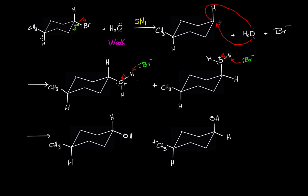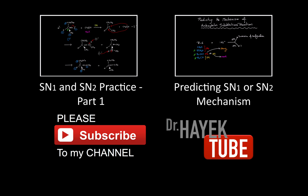Looking at the stereochemistry: CH₃ and Br were in trans configuration relative to each other. In the first product, CH₃ and OH are also trans since they face opposite sides. In the second product, CH₃ and OH are both facing the same side (upside), so this is cis. Remember, SN1 always gives a mixture of stereoisomers. In this case, since Br was on an equatorial bond, we obtain one product with OH on equatorial and another with OH on axial.